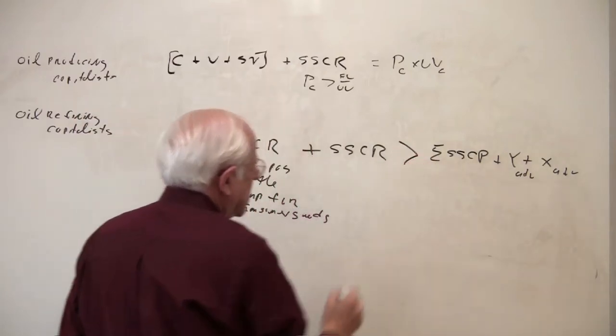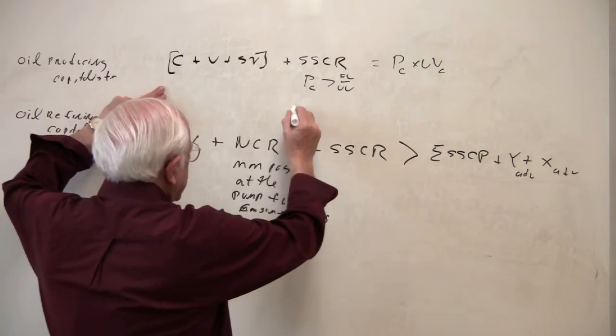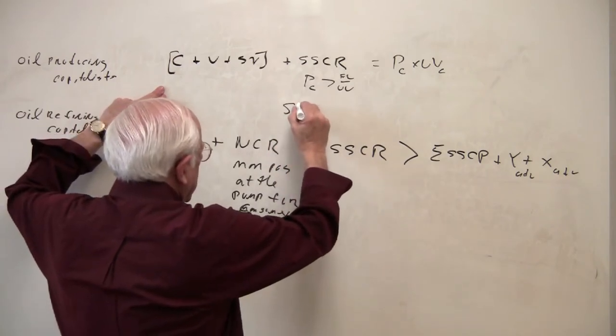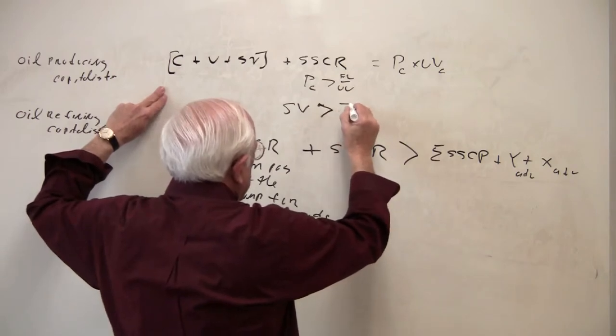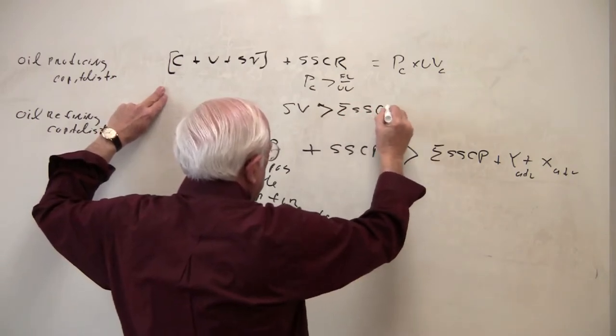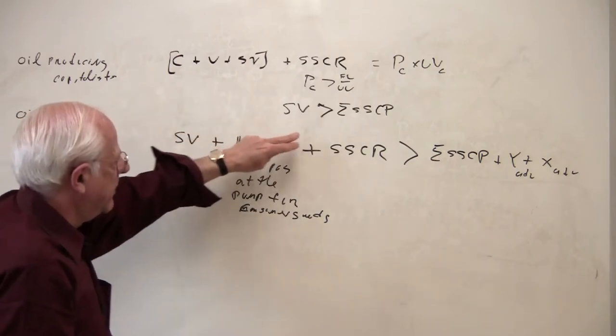And my guess is the inequality goes this way. So we have the oil producing countries. They get a surplus value greater than this.